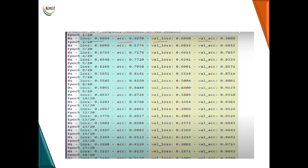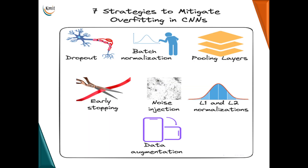When you have a model that produces high training accuracy and low testing accuracy, we go for different methods to fix it. These include dropout layer, batch normalization, pooling layer, early stopping, noise injection, normalization methods, and data augmentation. In your syllabus, the focus is on dropout, batch normalization, and L1 and L2 normalization methods.